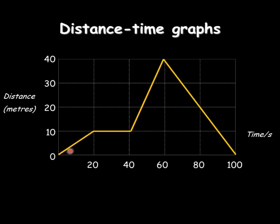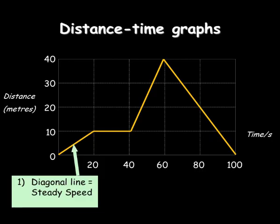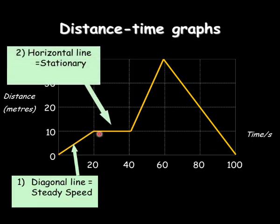So if you look at this first section here, you can see it starts at a distance of 0 and goes up to 10 in 20 seconds. Because it's a straight line, it means it's got a steady speed. So a steady speed from 0 to 10 metres. The second section is a horizontal line. All horizontal lines will mean that it stays at the same distance. So here it's staying at 10 metres, so it's stationary.